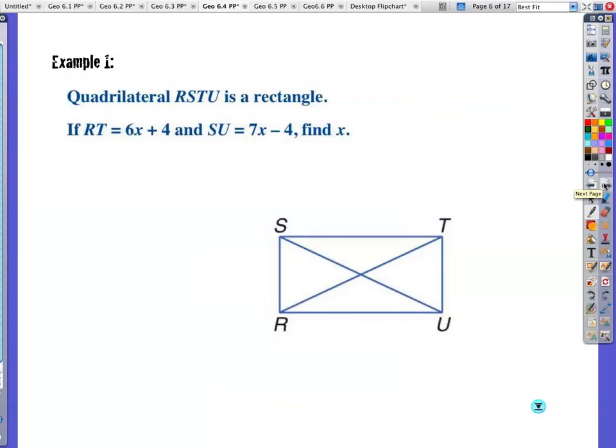Example one, quadrilateral RSTU is a rectangle. If RT, so this diagonal, is 6x plus 4 and SU, the other diagonal, is 7x minus 4, find the value of x. So if we're going to do that, then I'm going to set these equal to each other because if it's telling me it's a rectangle, then rectangles have diagonals that are congruent.